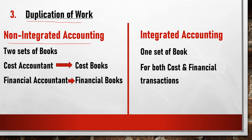The third feature is duplication of work. In a non-integrated system, two sets of books are maintained — one for cost-related transactions and one for financial transactions. When some transactions are common to both books, the amount is the same but the method of recording is different, increasing our work. This is known as duplication of work. But in integrated accounting, all transactions are recorded in a single book, so duplication does not exist and time is saved.